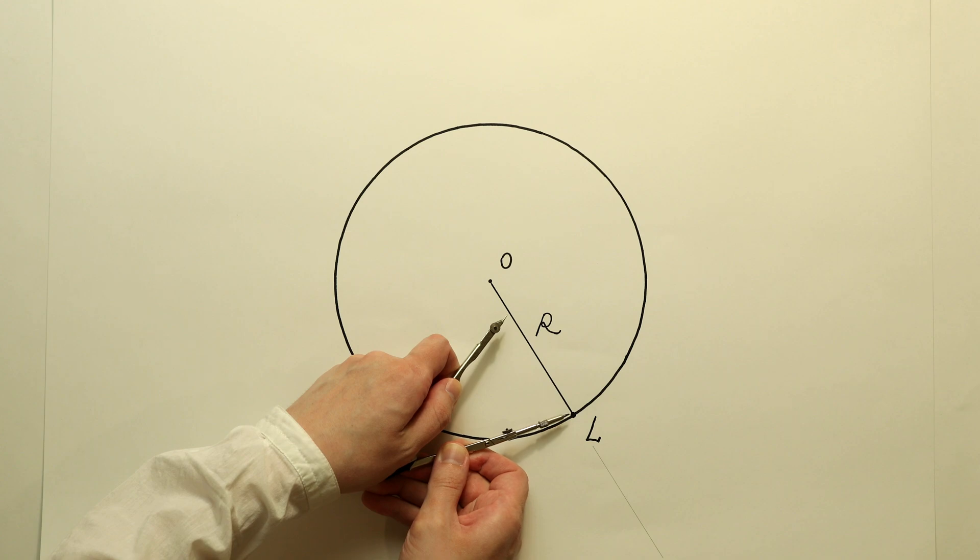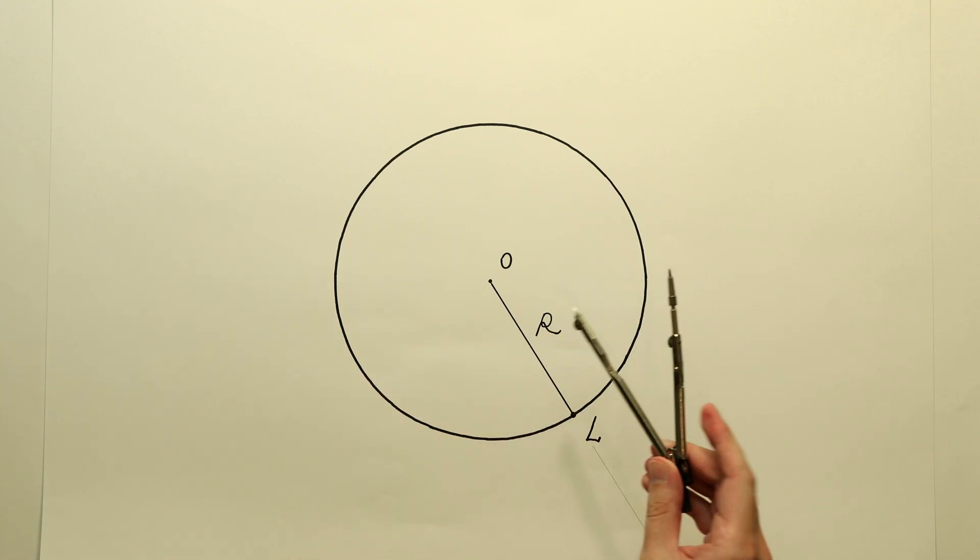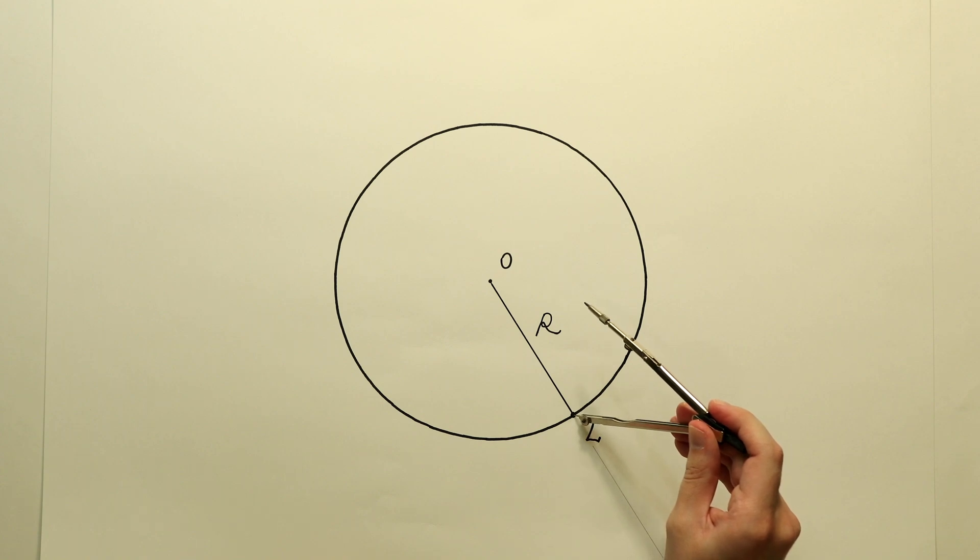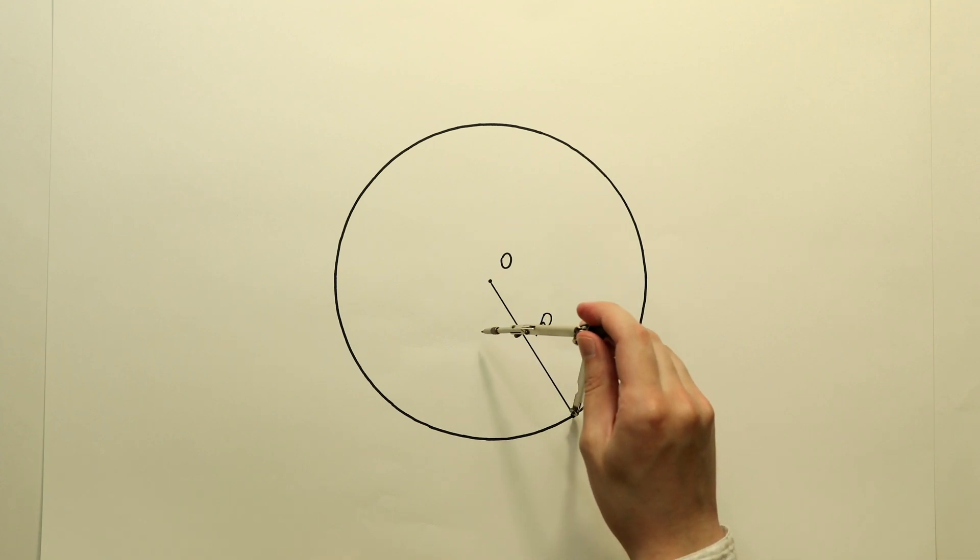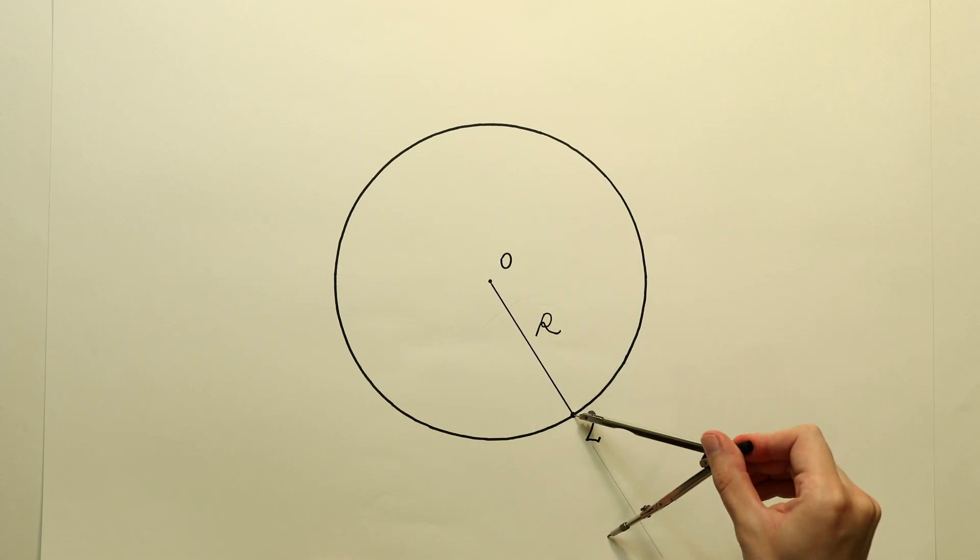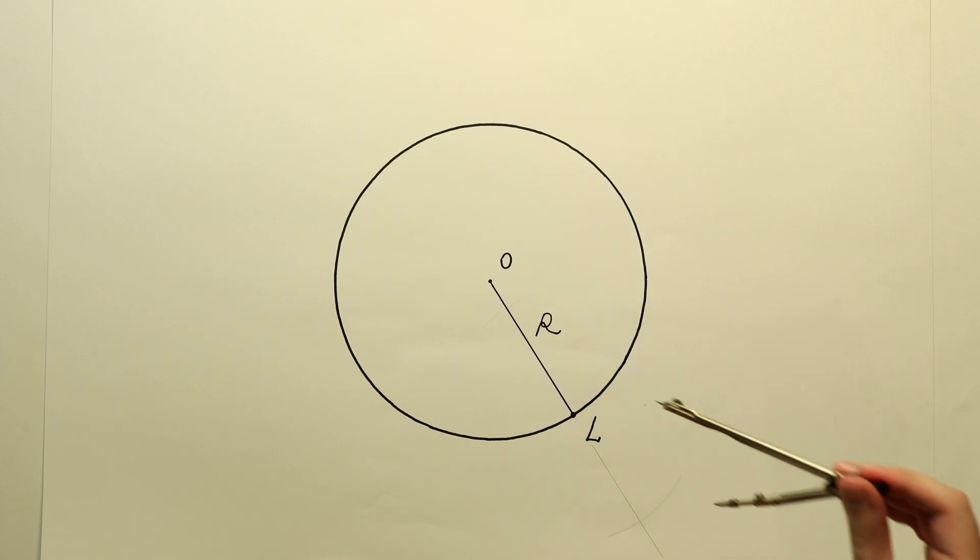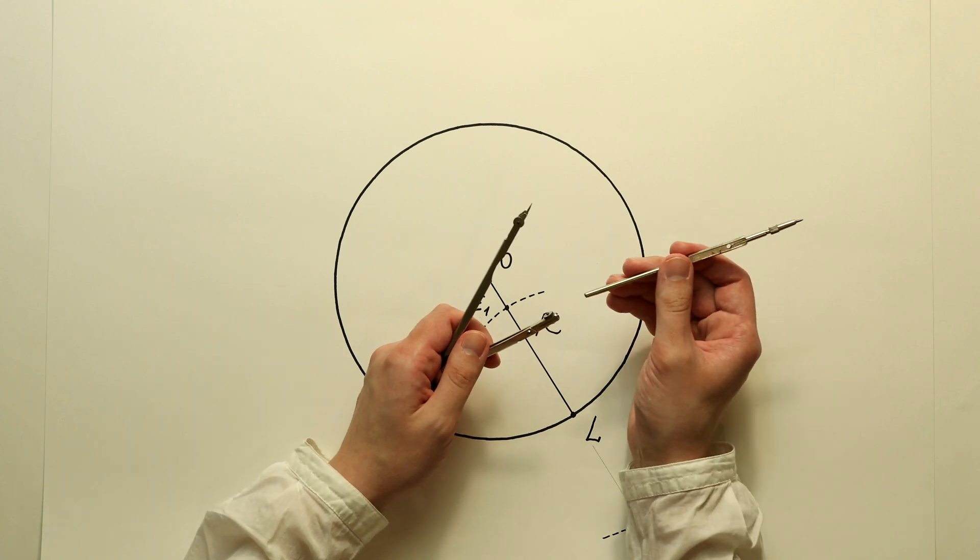Then we need to select the radius freely on the compass and make two intersection points with the radius line at the same distance from point L. I will give these intersection points the names of point E1 and point E2.